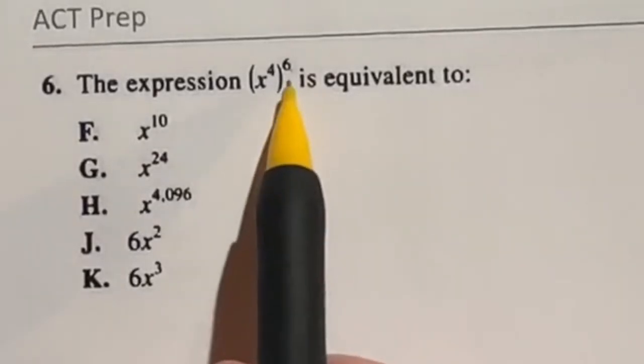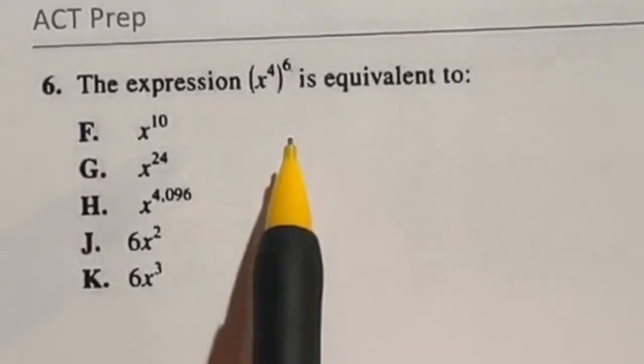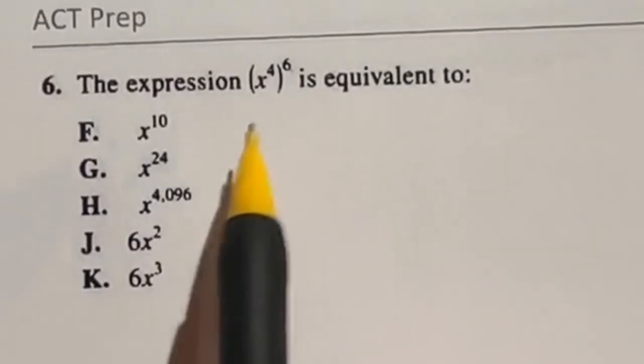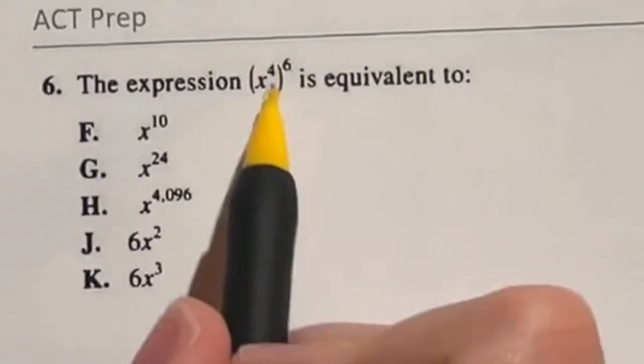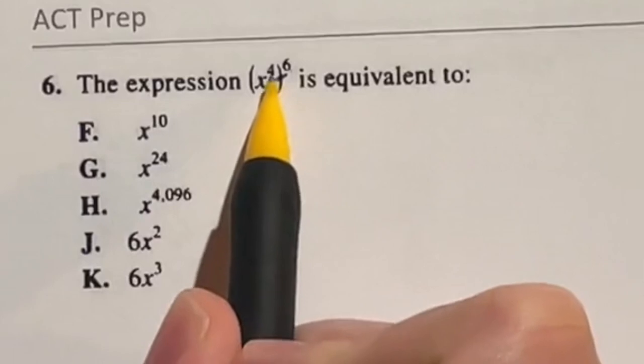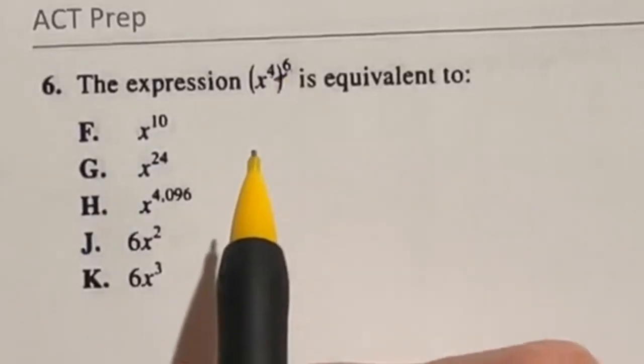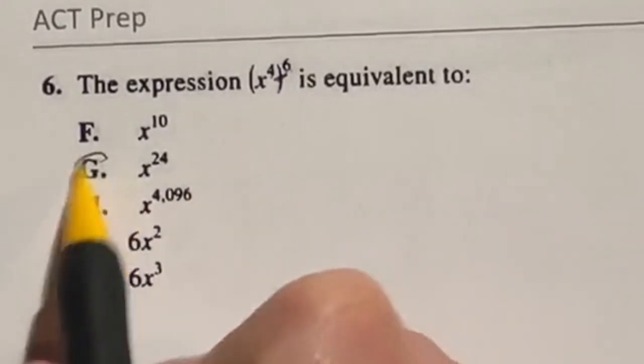So what happens when you raise an exponent to an exponent? Well there's a lot of exponent rules out there. For example, if you're multiplying the same base with two exponents you can add the exponents. Dividing them is the quotient rule, that means you can subtract them. But in this case when you have an exponent raised to an exponent you can just multiply those two exponents together. So 4 times 6 is going to give me 24, which means this final answer should be x raised to the 24th power, which is answer G.